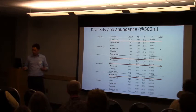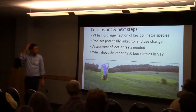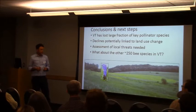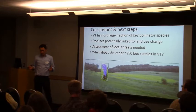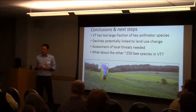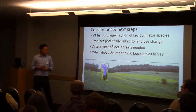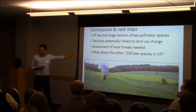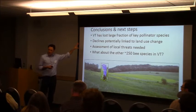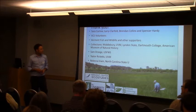Some quick conclusions: Vermont has lost a large fraction of what is a key pollinator taxon — the genus Bombus. These declines are potentially linked to land use change; we actually have data in Vermont to ask whether land use changes over time parallel the declines in species we see. We need more assessment of local threats, including pesticide application, herbicides, fungicides, and land use conversion. Finally, it's worth thinking about what's happening with the other 250 species of pollinating bees that occur here — this study covers just 18 species and there are lots of others not part of this survey.